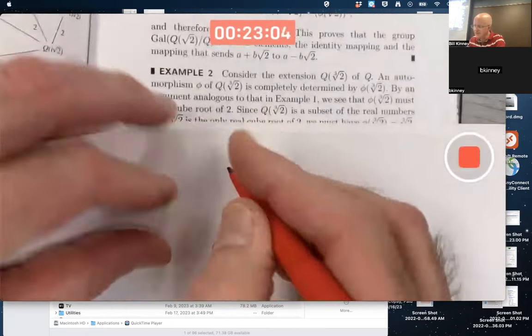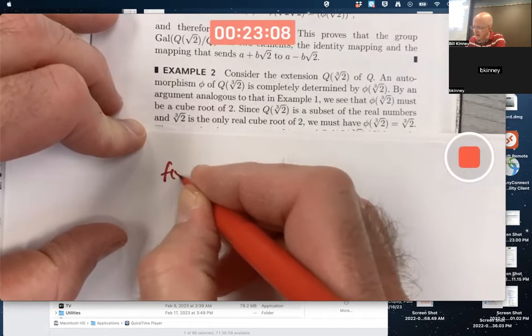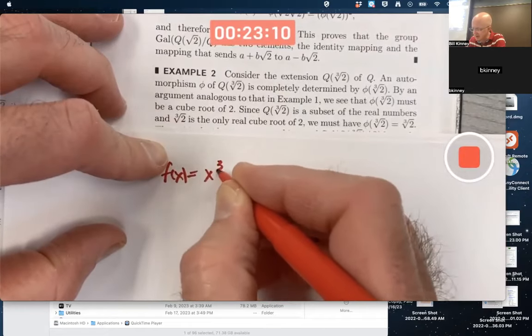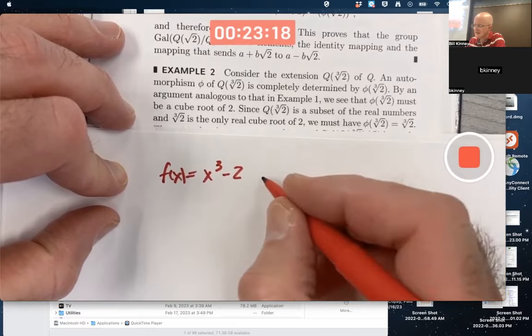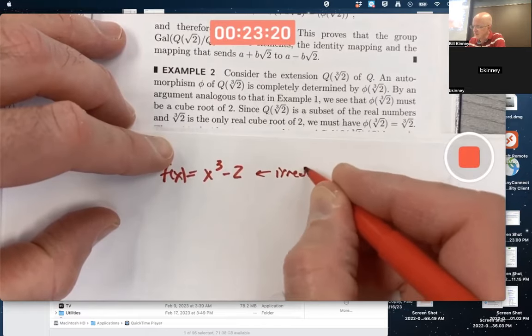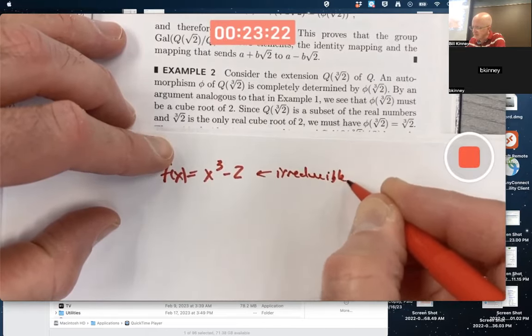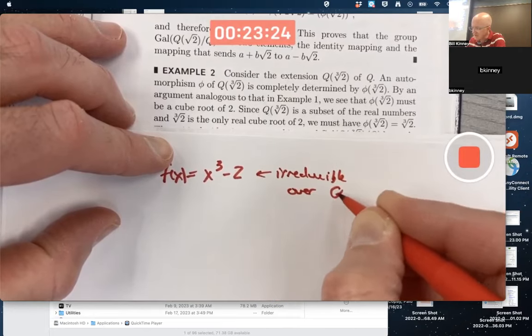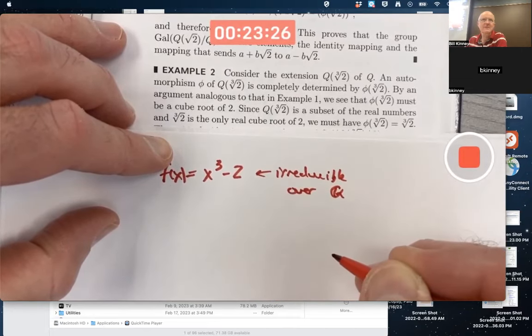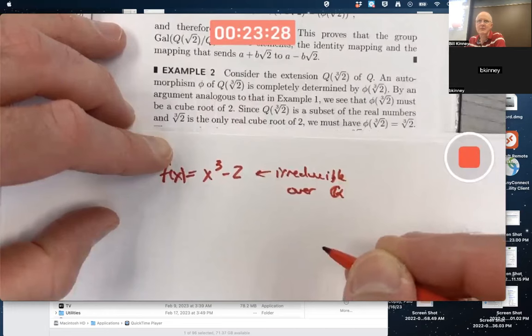Cube root of 2 is a root of the irreducible polynomial x cubed minus 2. This is irreducible over the rationals. It's not irreducible over the reals. It is irreducible over the rationals.